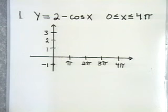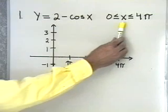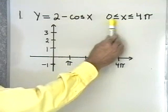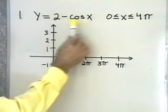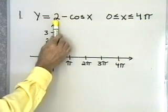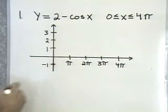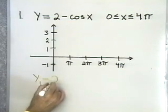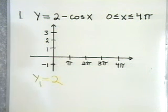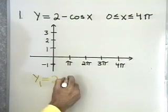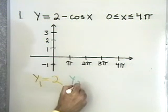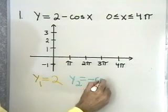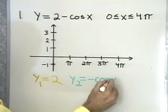For problem number 1, we have y is equal to 2 minus cosine x. We want to graph this between x equals 0 and x equals 4π. I'm going to look at this as two separate functions: y1, which is equal to 2, and y2, which is equal to negative cosine x.